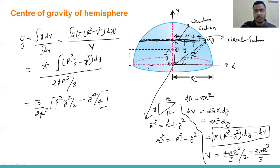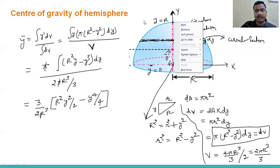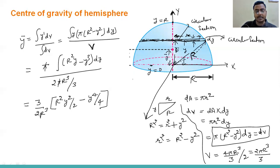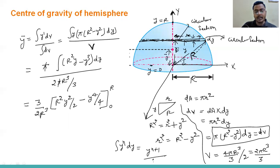Now for the limits: when the segment is at the bottom, y equals 0; when the segment is at the top, y equals capital R, because that distance is the radius. So lower limit is 0 and upper limit is capital R. The integration formula used is: integration of y^n dy equals y^(n+1)/(n+1).